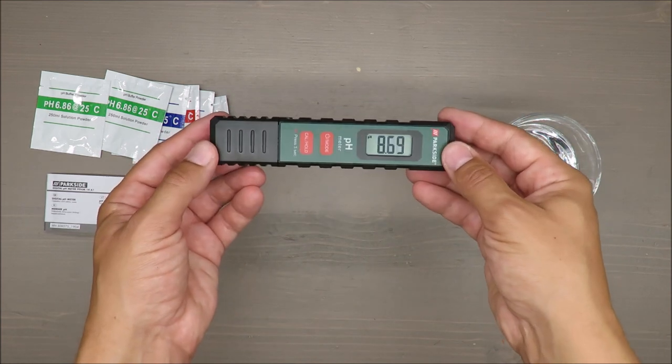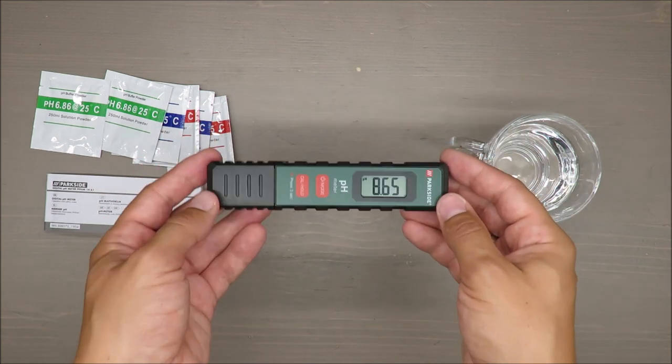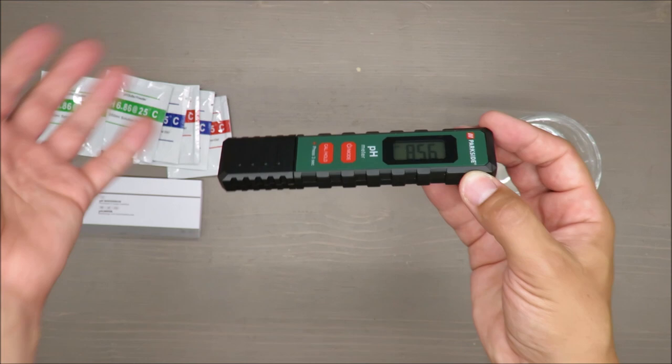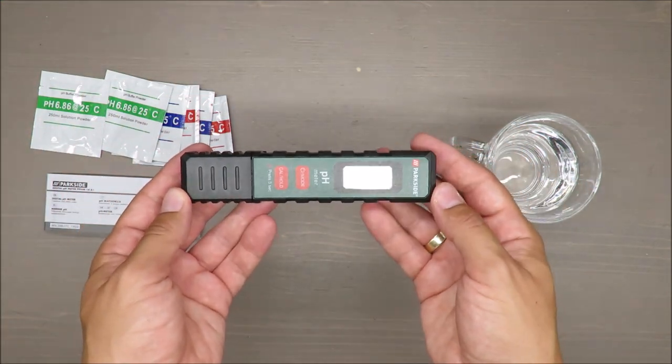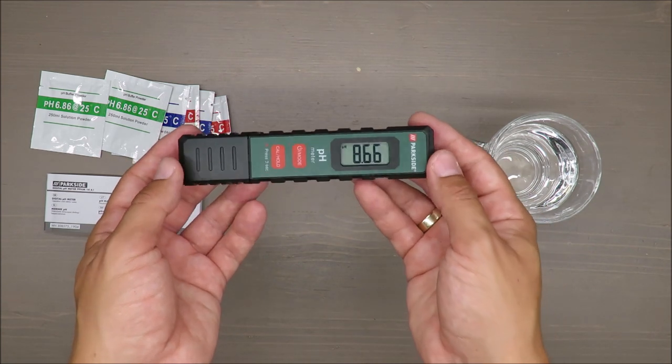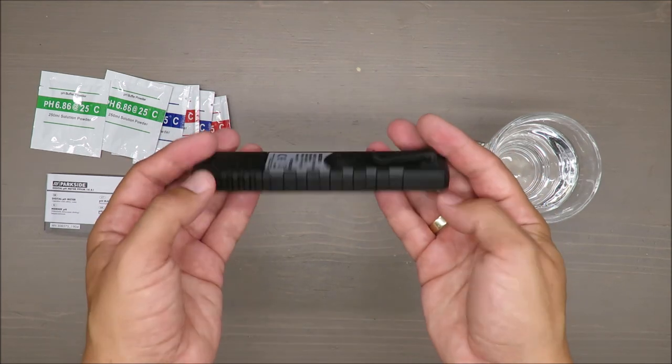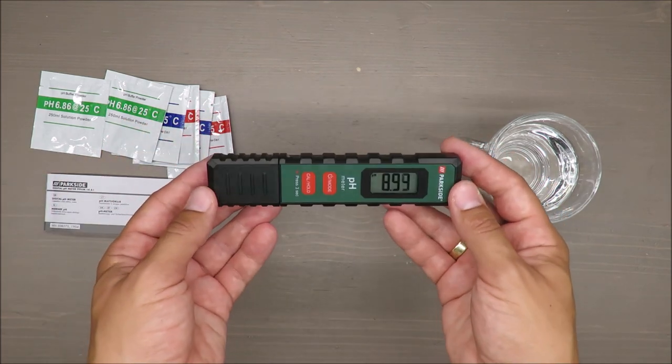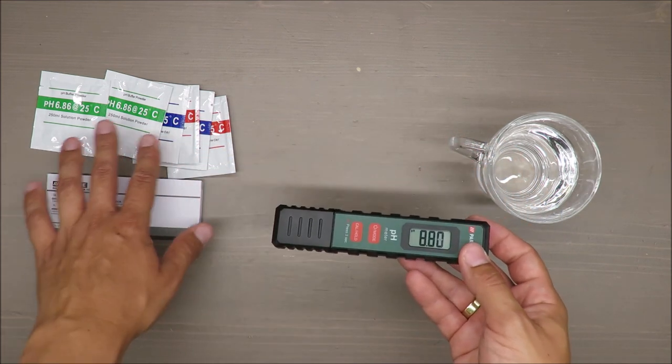But for beers, for instance, we are ending in the level of 4.5. And for those who are curious about vodka, because if I mention beer vodka should be mentioned as well, vodka is reaching, depending on the brand of course, but it's around 9. So this is real life fluids that you can consume. And yes, I should make a calibration, but on purpose I will not do it.